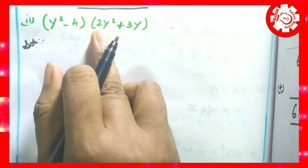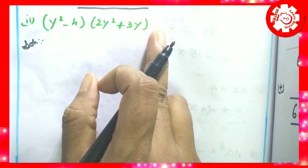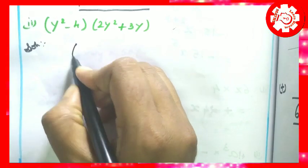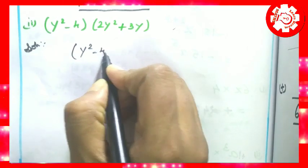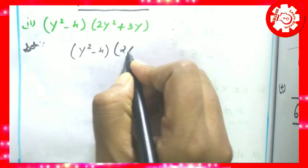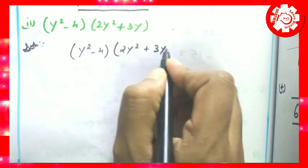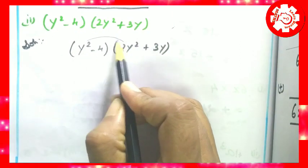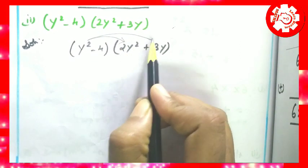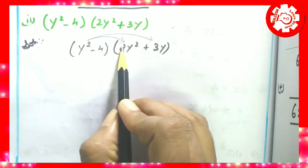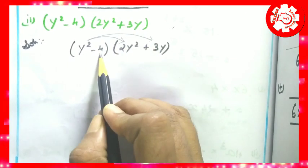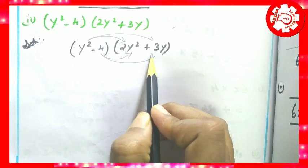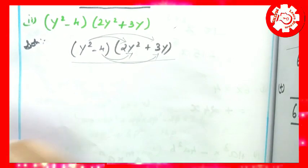Second question: y squared minus 4 into 2y squared plus 3y. This is a binomial multiplied by a binomial. We follow the same procedure. The terms will distribute: first with first, first with second, second with first, second with second. You can practice this as usual.